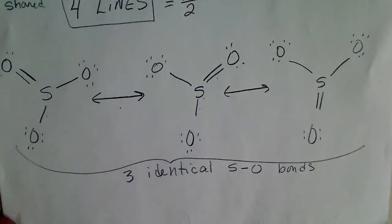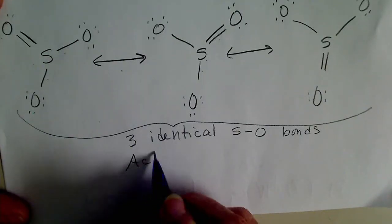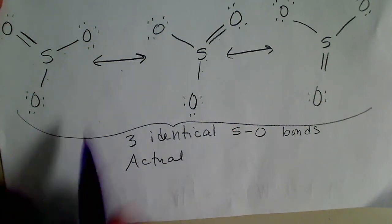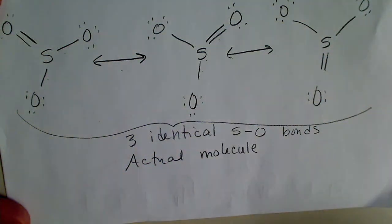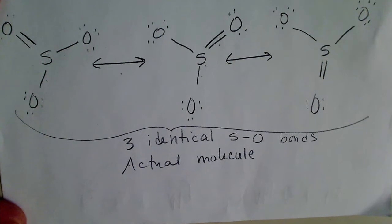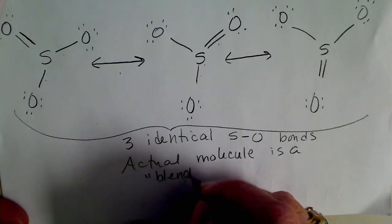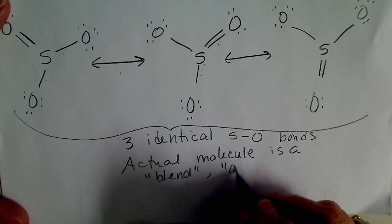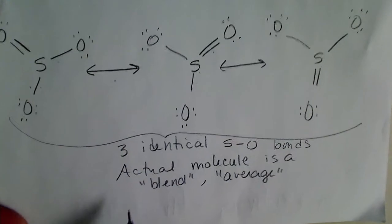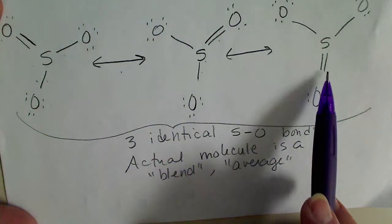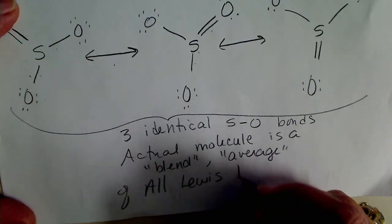When we have a choice on where to place the double bond, if we write all of the resonance structures available, the actual molecule is a combination of all three resonance structures. This drawing of resonance structures is just for us to do some bookkeeping. The actual molecule is a blend. Some books say an average, or if we stack one structure right on top of the other, we could say the real structure was a juxtaposition of all three of those Lewis dot structures.